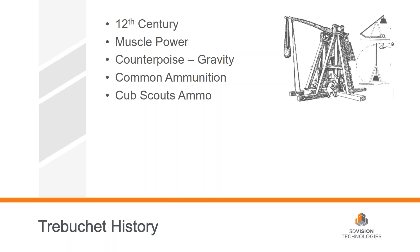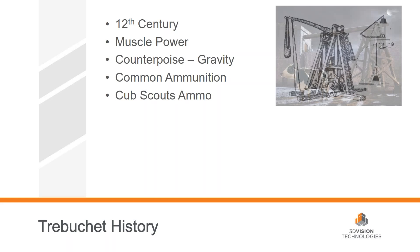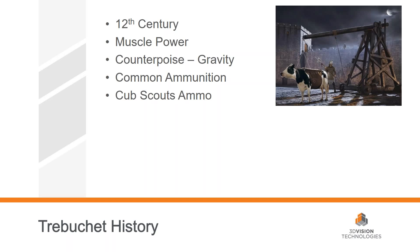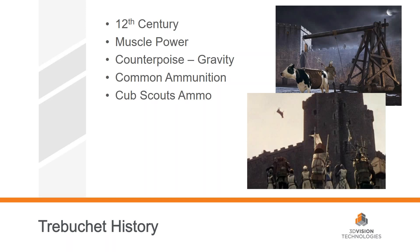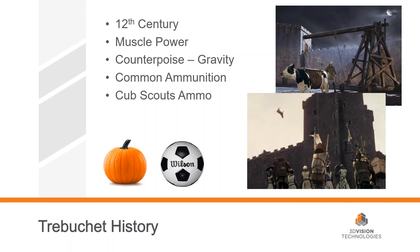Some common ammo: since these siege engines were actually built outside the castle, giving enemies plenty of time to know they were coming, the ammunition was really what was laying around in the field — big tree stumps, rocks, and even things like cows. What we were going to throw for the Cubs were pumpkins and soccer balls. We actually ended up using a 6-pound medicine ball, an 8-pound medicine ball, and a 10-pound medicine ball, just to show the difference in how it affected the trajectory and distance of flight.